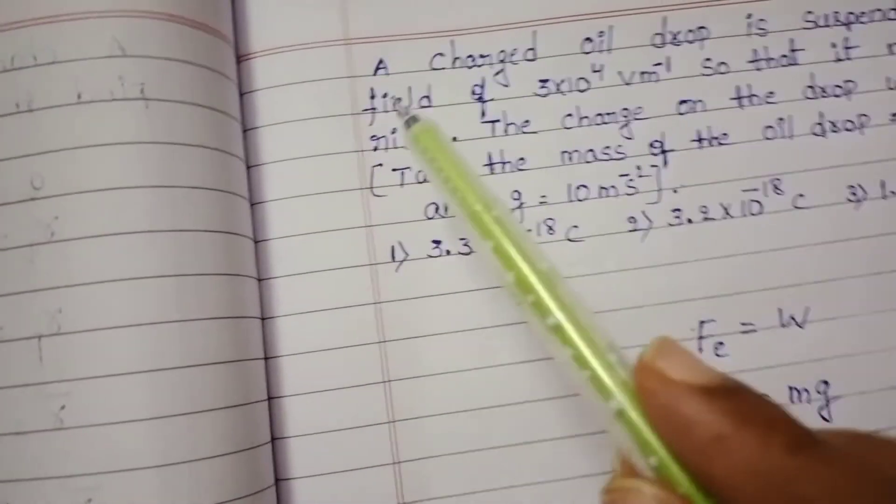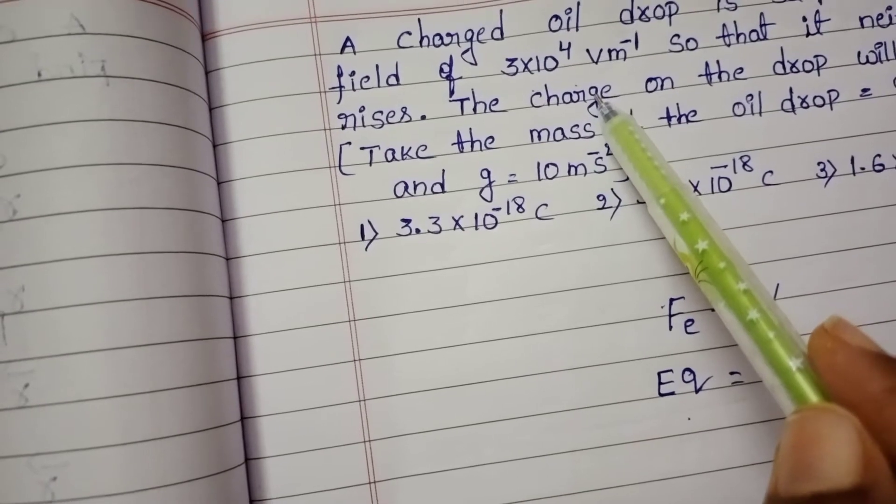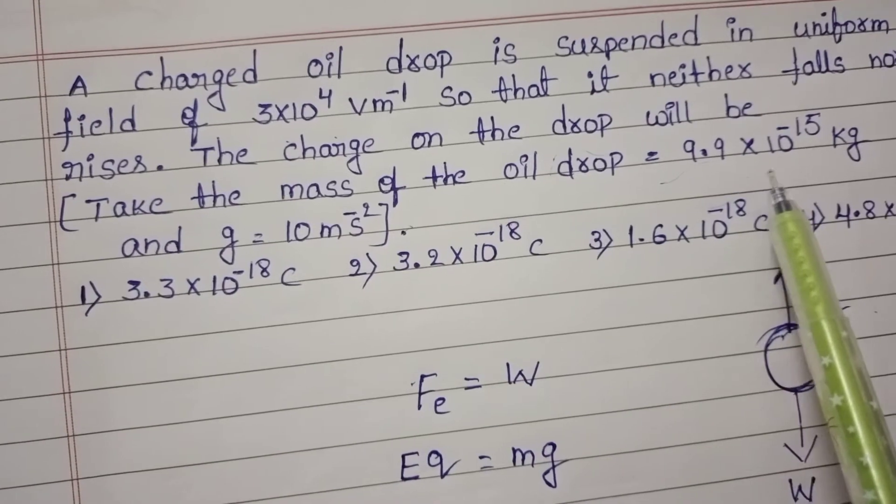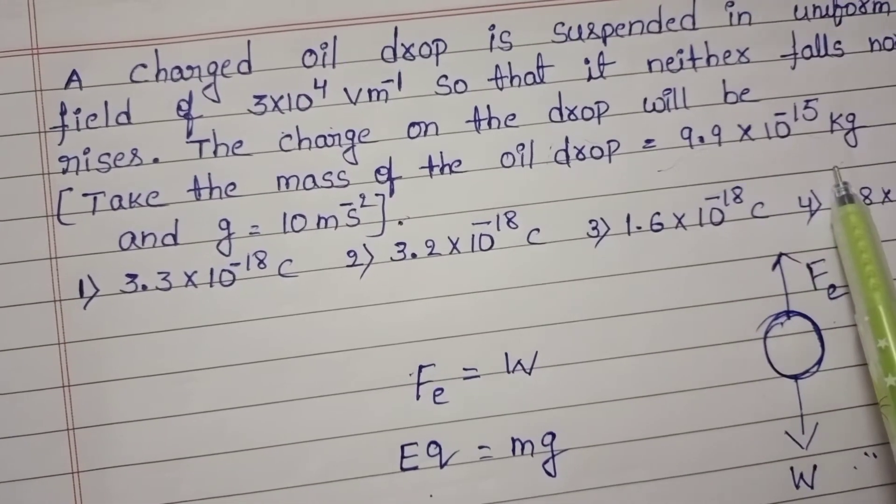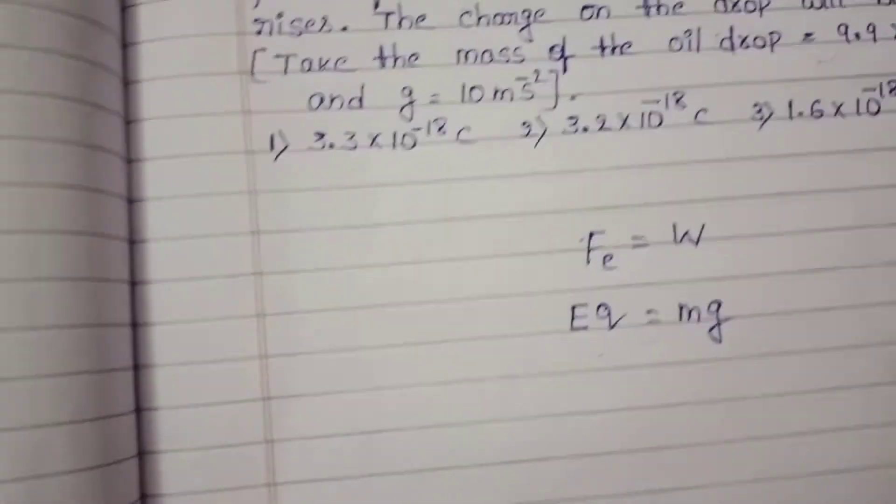We know intensity of electric field is 3 into 10 power 4 volt per meter and mass of the oil drop is 9.9 into 10 power minus 15 kg and acceleration due to gravity is 10 meter per second square.